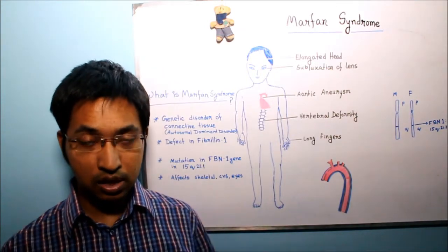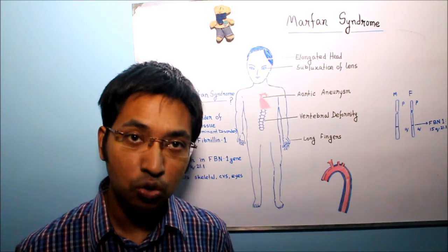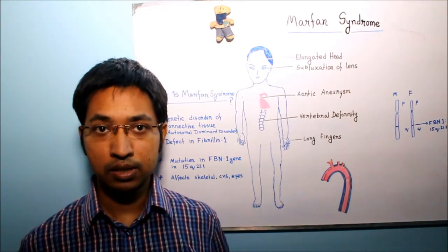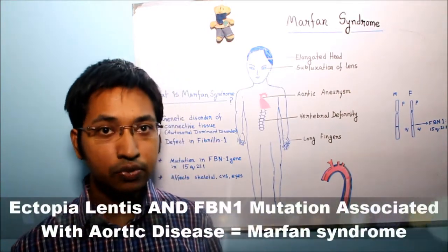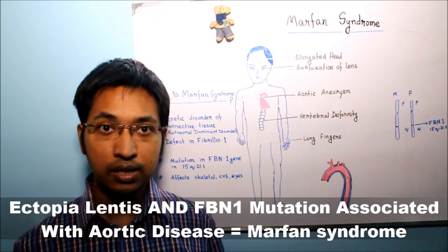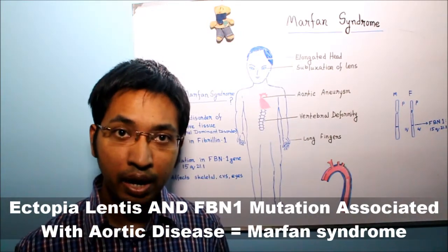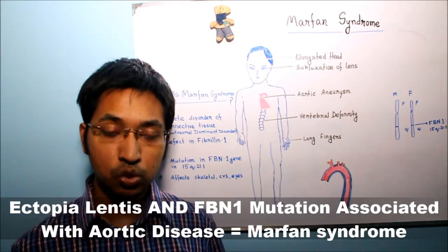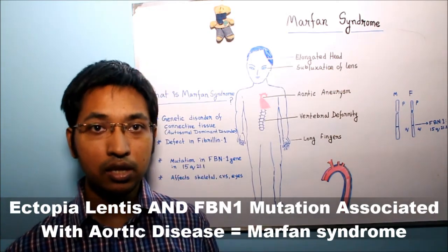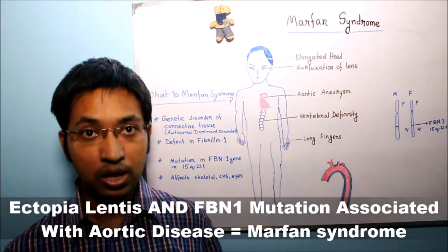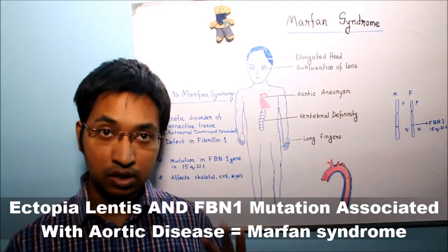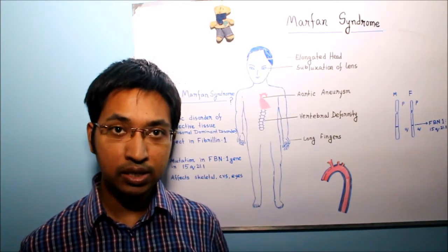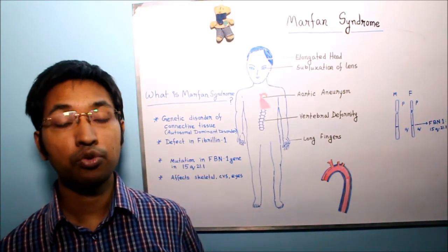The fourth rule, still in the absence of family history: when the individual has ectopia lentis and also has an FBN1 mutation that was previously associated with aortic disease, the individual is diagnosed as Marfan syndrome even in the absence of aortic root dilation. These four rules apply when there is no family history of Marfan syndrome.